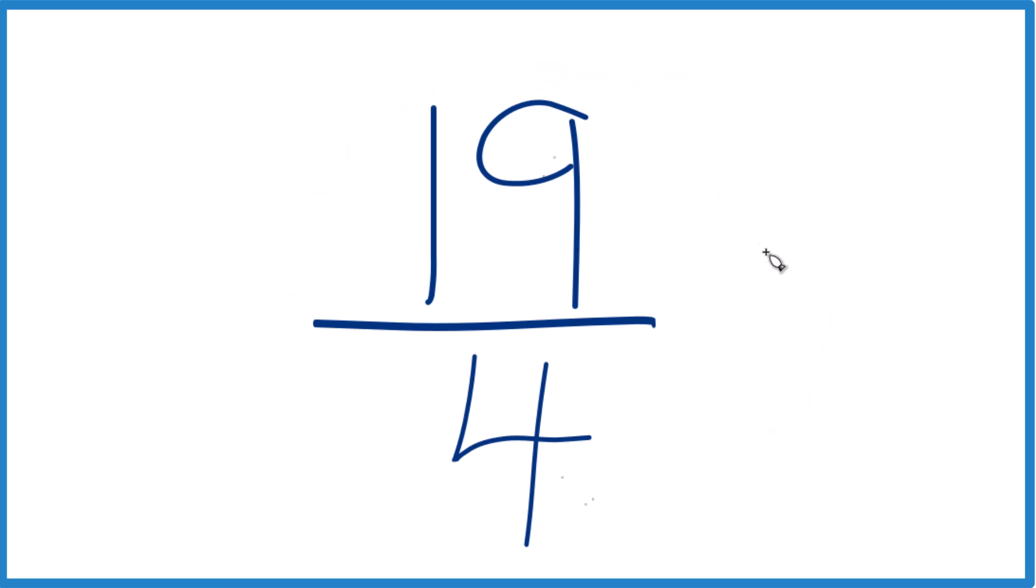first we need to find a number that goes evenly into 19 and 4, a whole number that goes evenly into 19 and 4. That's our common factor.